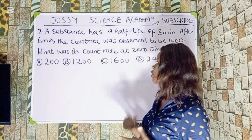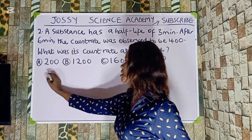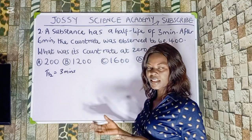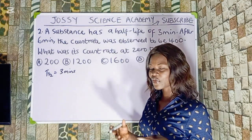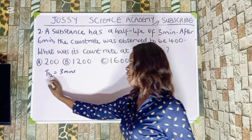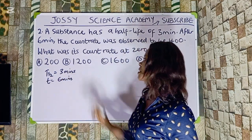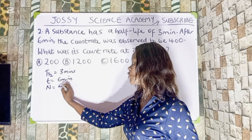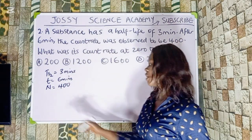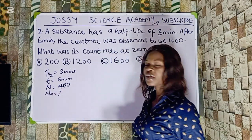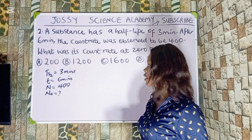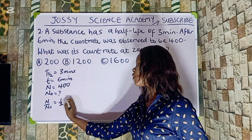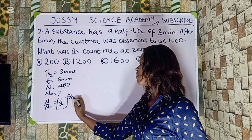The half-life is 3 minutes. The time after decay, t, is 6 minutes — don't confuse this with the half-life. The count rate after decay, N, is 400. We are looking for the count rate at zero time, which is the original number of atoms N0 before decay. Using our formula: N over N0 equals 1 over 2 raised to the power of t over half-life.